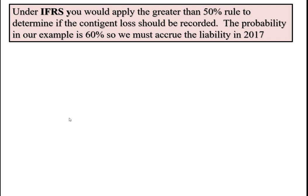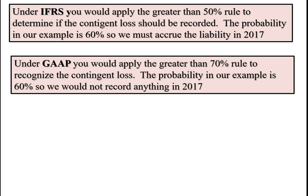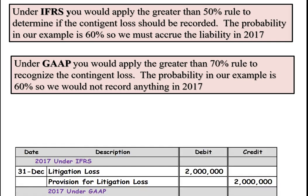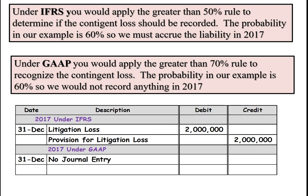Under the international standard, we apply the greater than 50 percent rule. Since it's 60 percent, we have to accrue something in 2017. But under GAAP, you apply the greater than 70 percent rule, so you would record nothing in 2017. For 2017, under the international standard, it would have recorded a loss of two million rupees and set up a liability account for two million rupees. Under U.S. GAAP, there would be no journal entry.